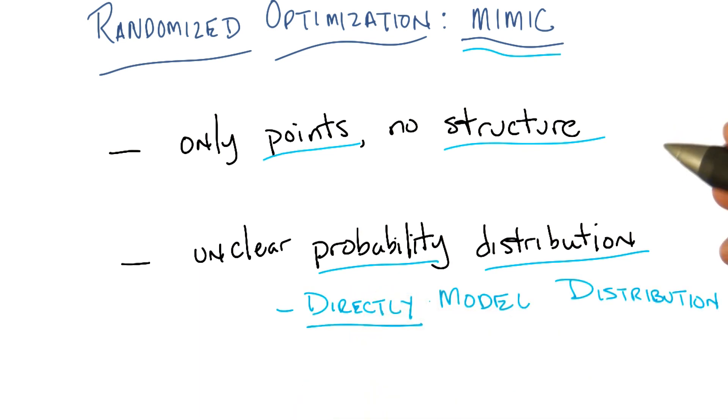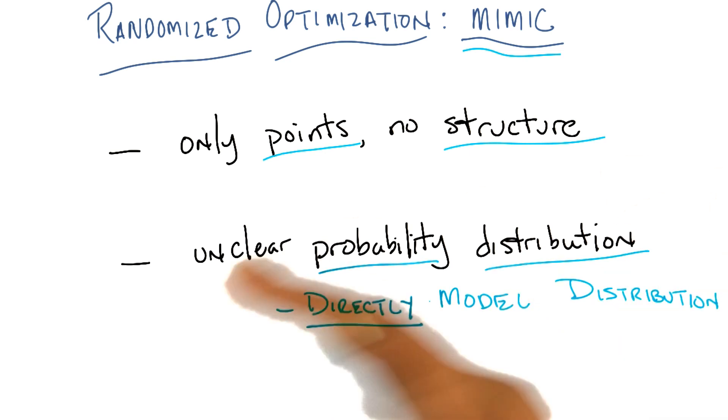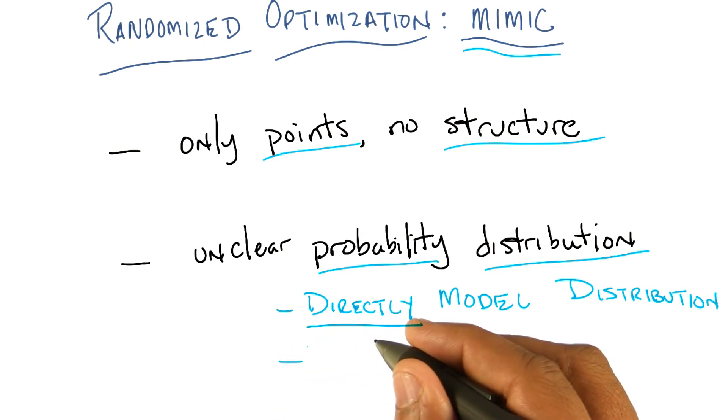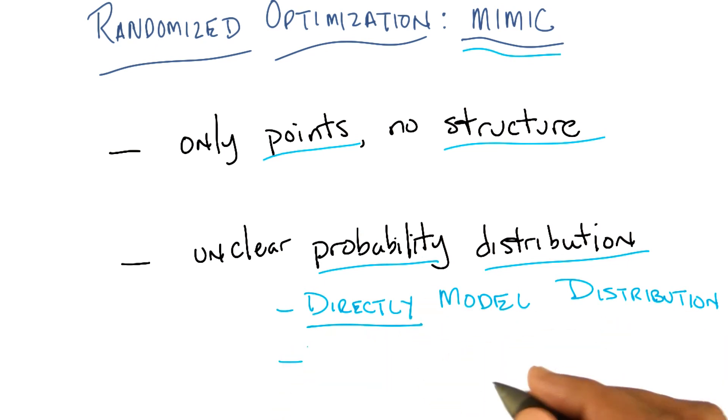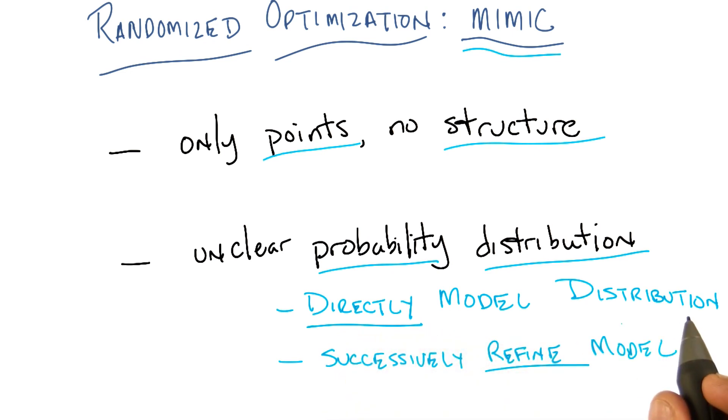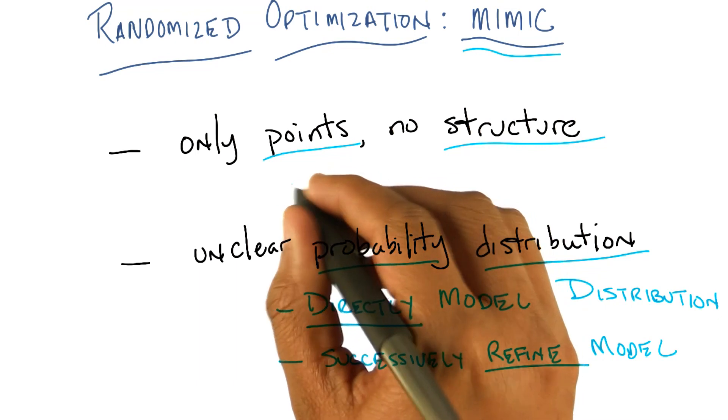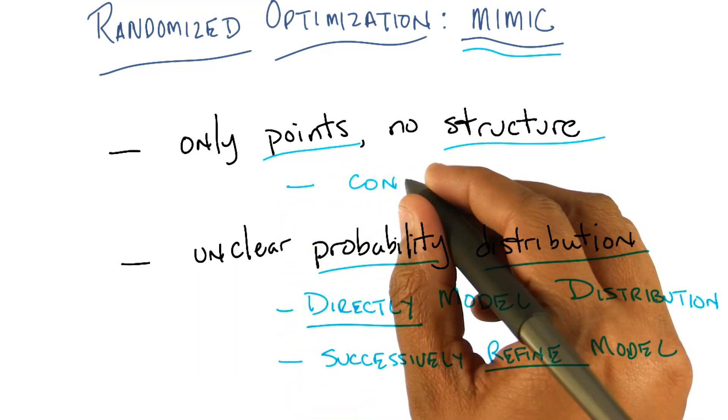And like I said, Michael, I will define exactly what this probability distribution is for you and hopefully you'll buy that it seems like a reasonable distribution to model. And given that you have this probability distribution that you're directly modeling, the goal is to do this sort of search through space just like we did with all the rest of these algorithms. And to successfully refine the estimate of that distribution. And the idea is that if you can directly model this distribution and refine it over time, that that will in fact convey structure.